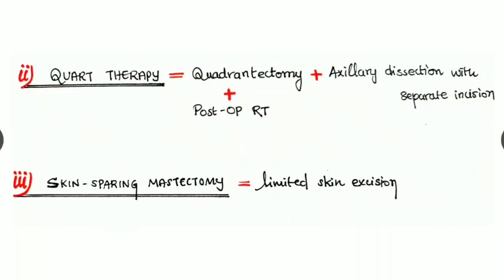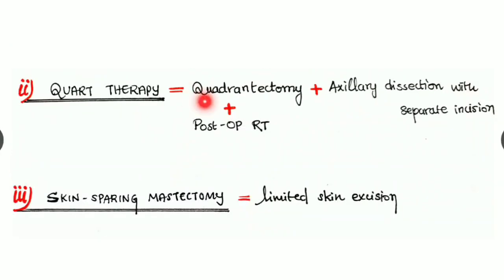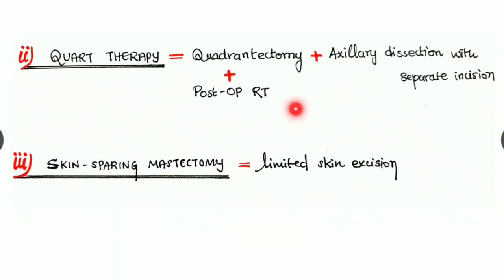Second breast conservation surgery is the QUART. From the name QUART: Q-U for quadrantectomy, which means the quadrant with the lesion is removed. A for axillary dissection with a separate incision. And RT for postoperative radiotherapy. And this is the QUART. Thirdly, it is the skin-sparing mastectomy where there is limited skin excision and we are sparing most of the skin.